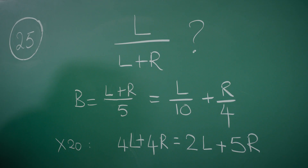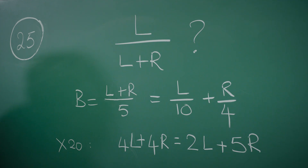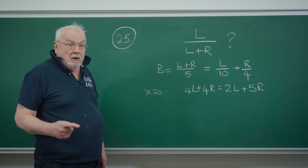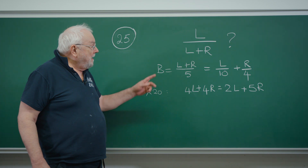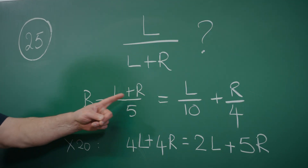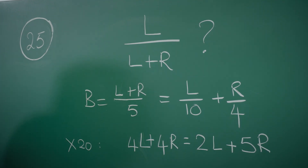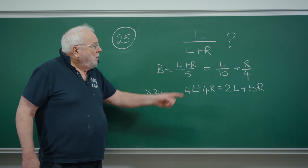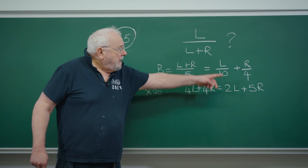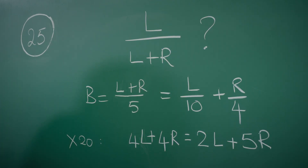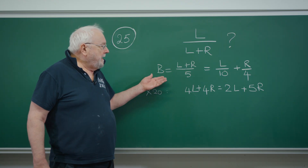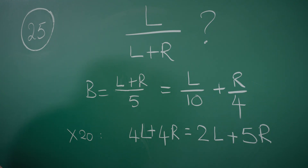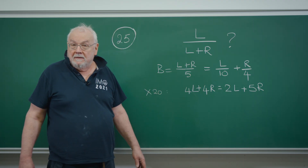We're now given some information about eye colour. Let's suppose that the number of students at the school with blue eyes is capital B, and we're given two ways to work that out. We're told that a fifth of the students at the school have blue eyes, so B equals L plus R divided by five. But we're also told the information separately: one-tenth of the left-handed students have blue eyes, and a quarter of the right-handed students have blue eyes. These two different ways of working out B allow us to put an equal sign between these two quantities and forget about blue eyes forevermore — we've just got an equation between L's and R's.